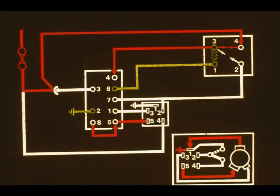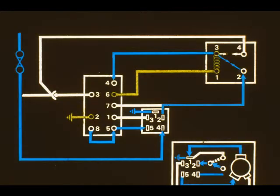At the same time, current shown in green flows through the heating coil in the delay unit and through the column switch to earth. As the coil heats up, the switch contacts in the delay unit change over.